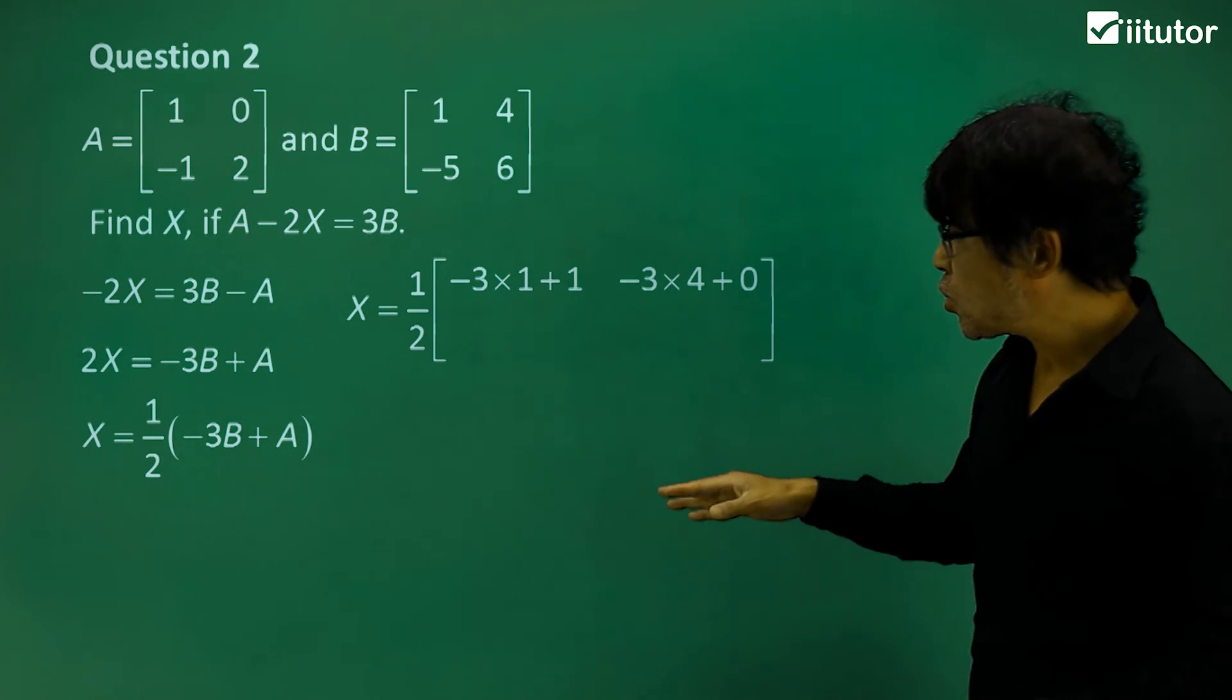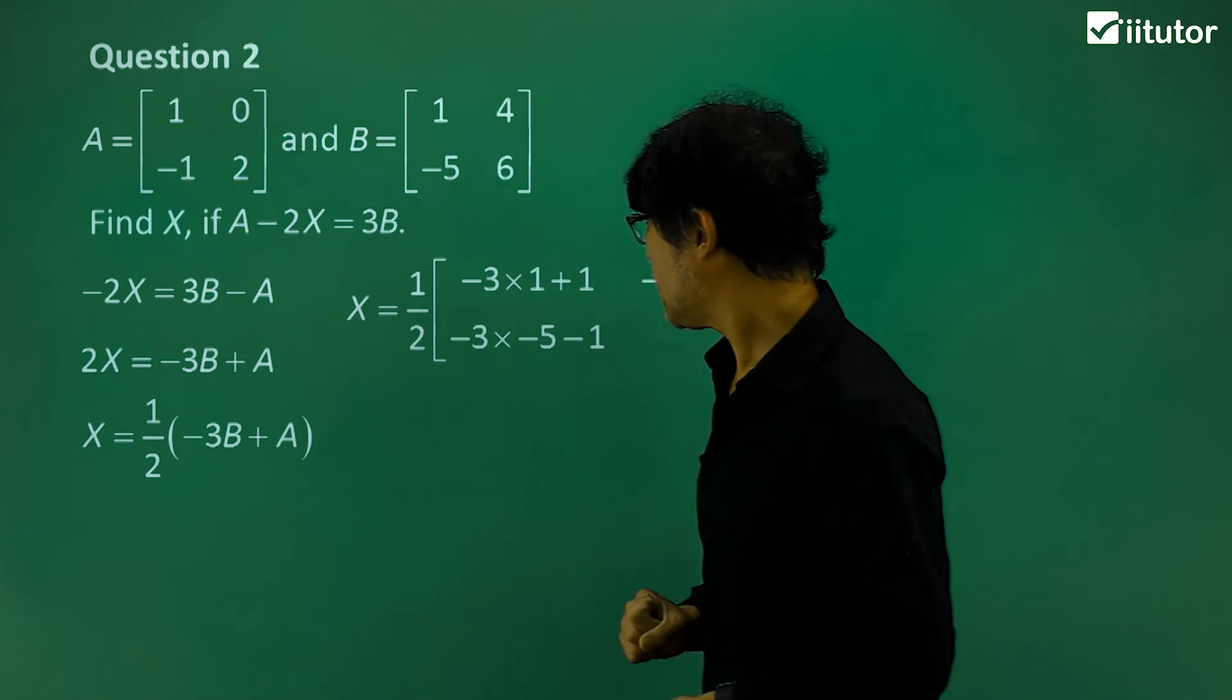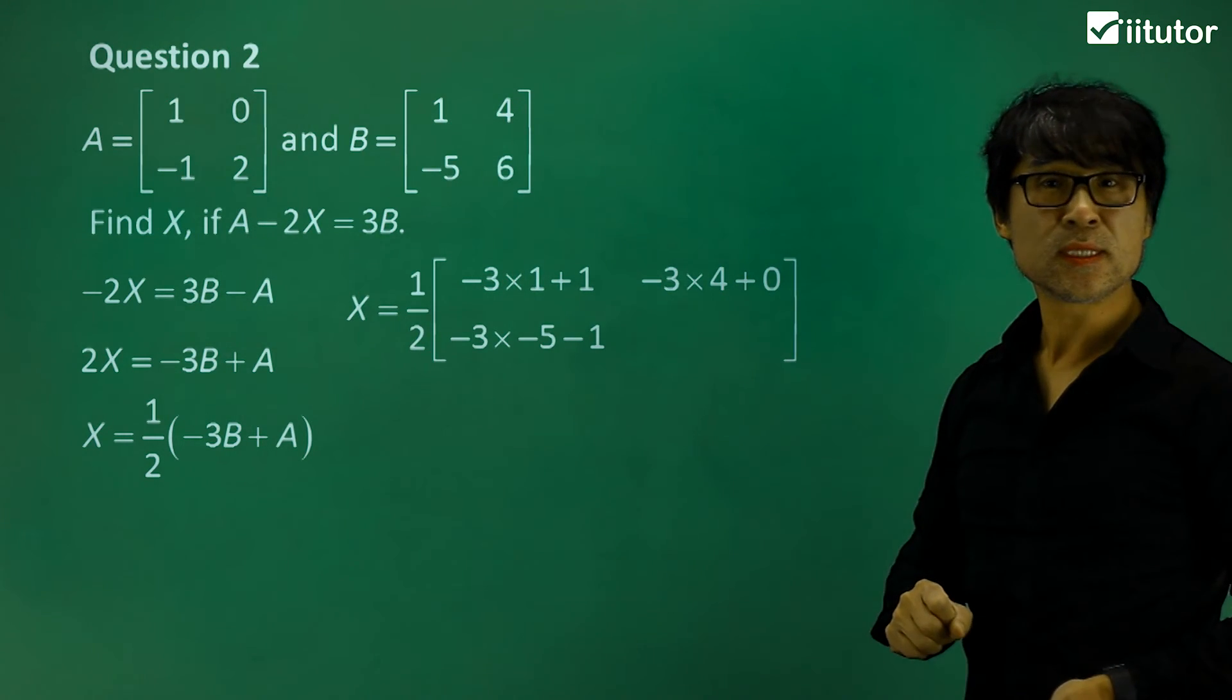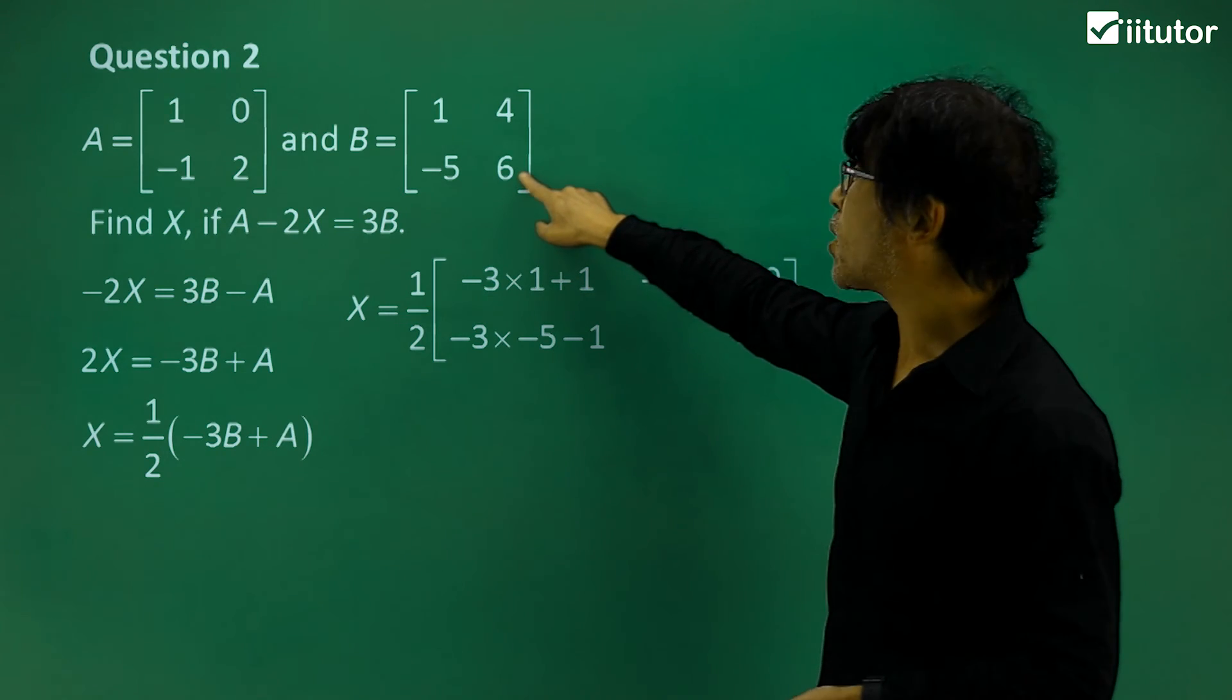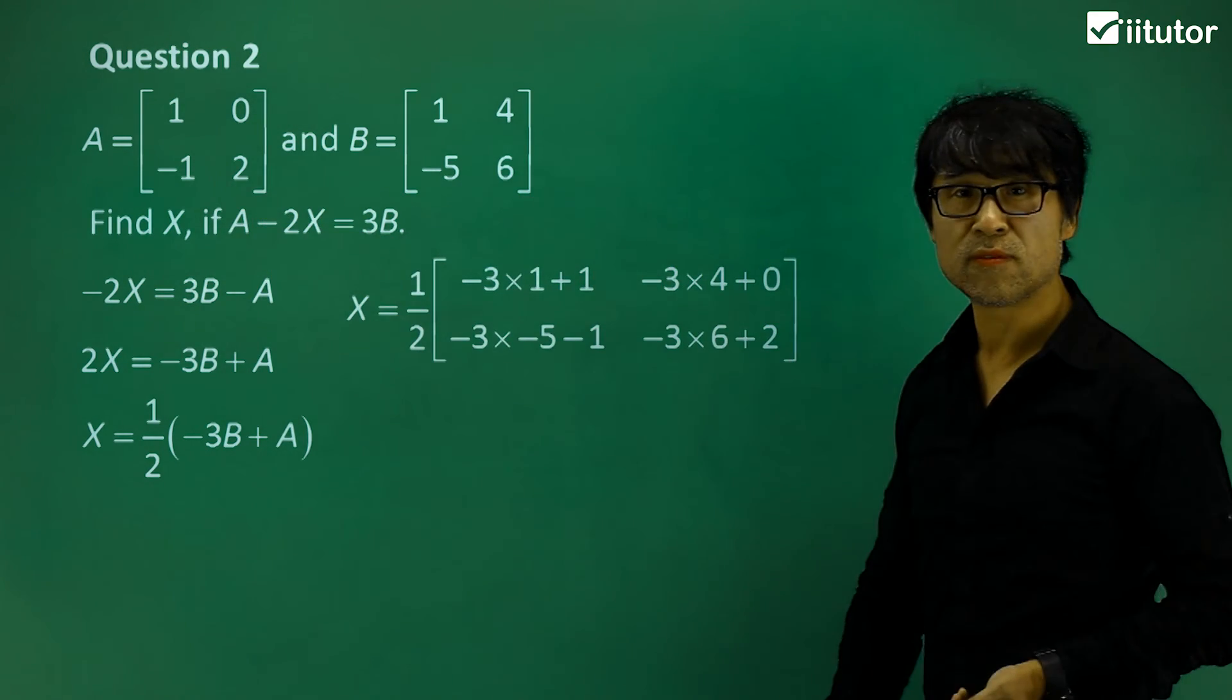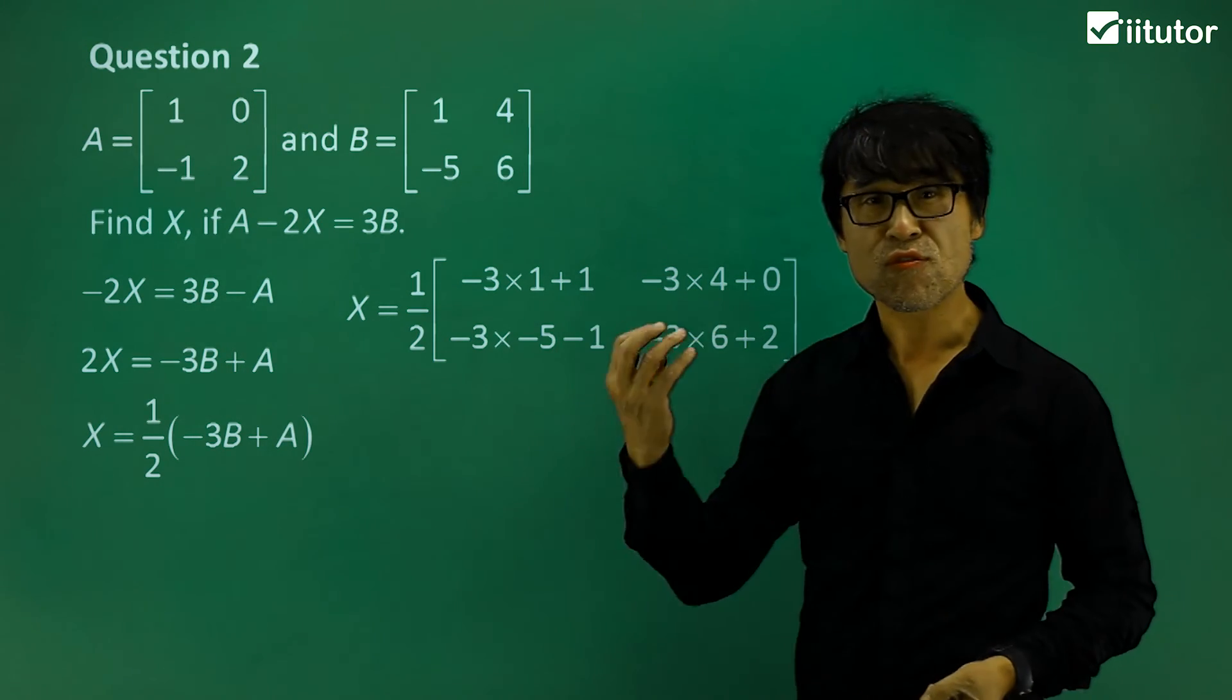Similarly, we do work for this and this one. We'll come out like this. And the last one, negative 3 times 6 plus 2. Just write it over. Too easy. So next step is to write your final answer.